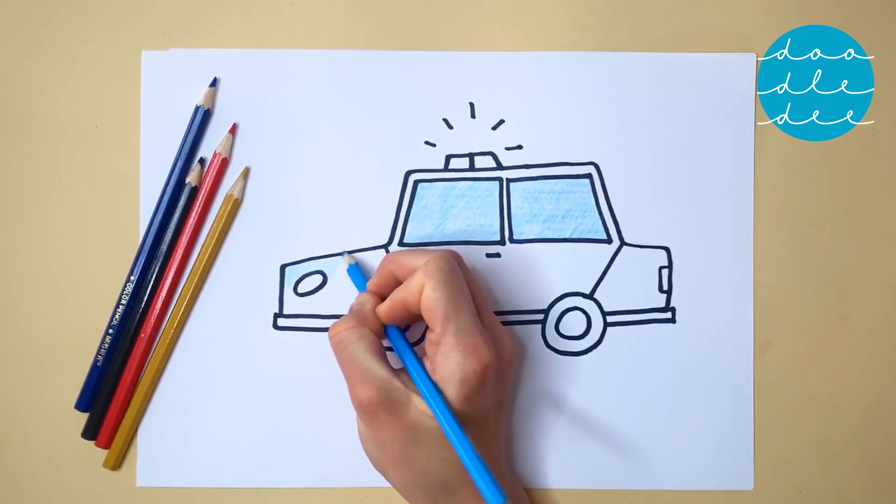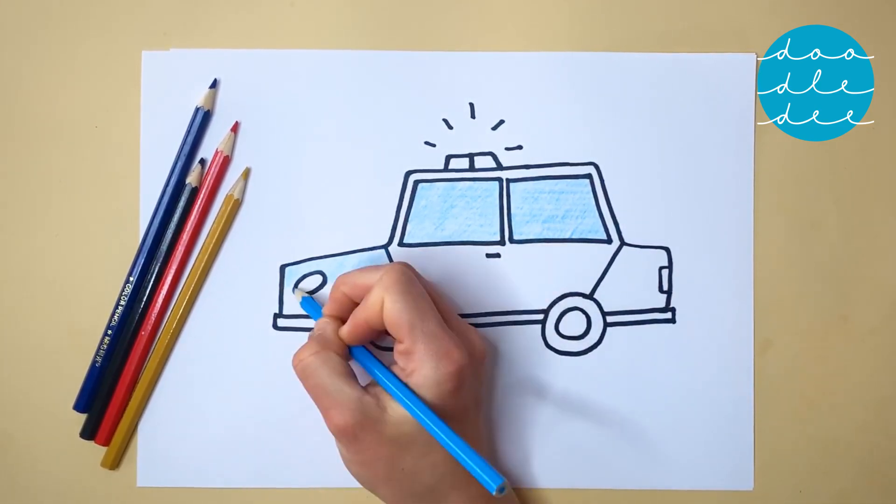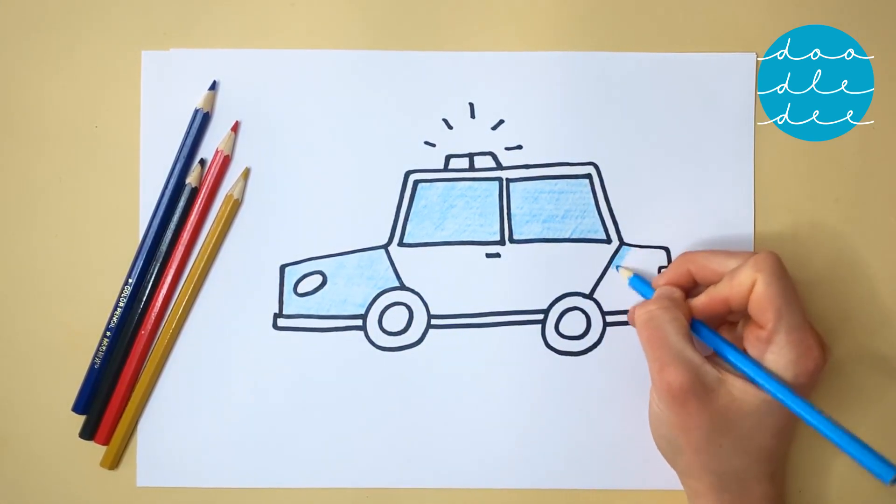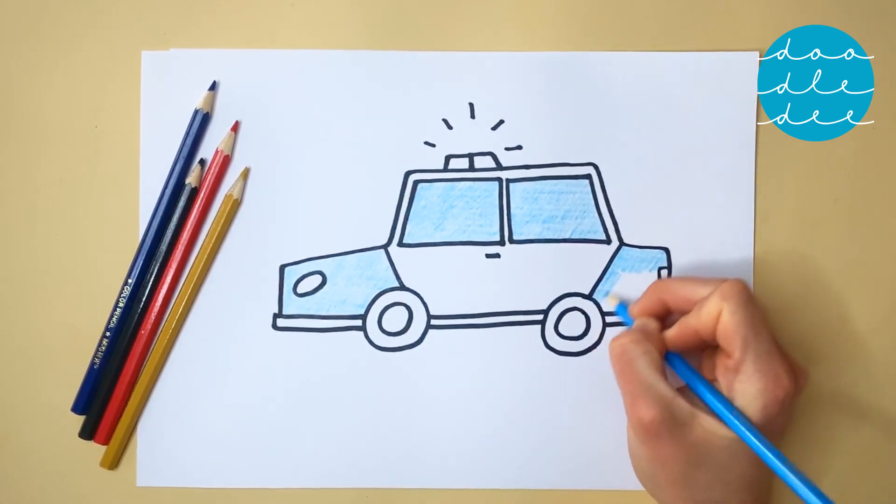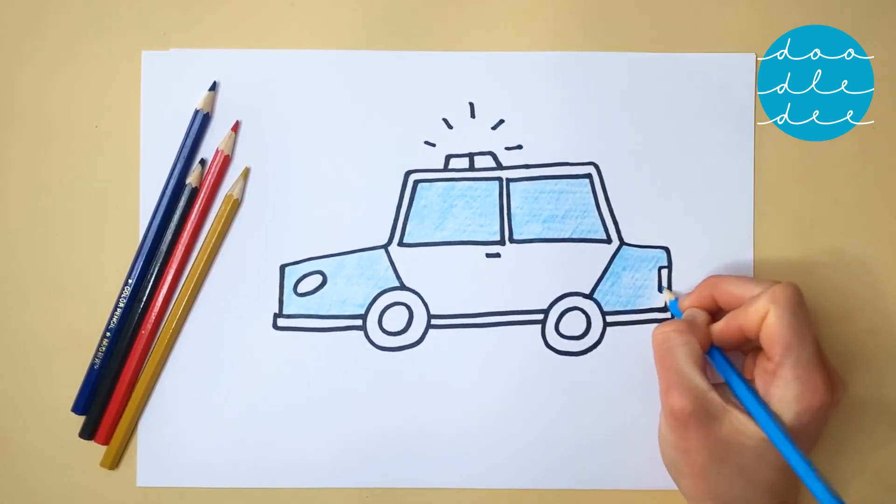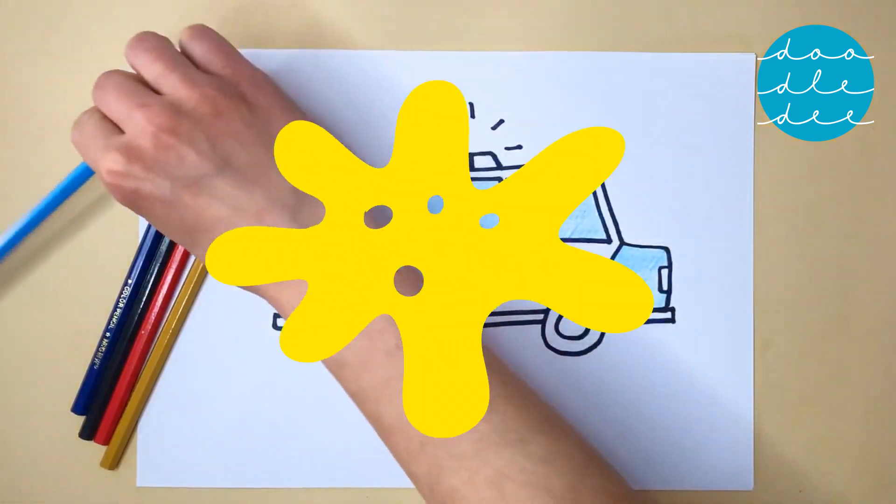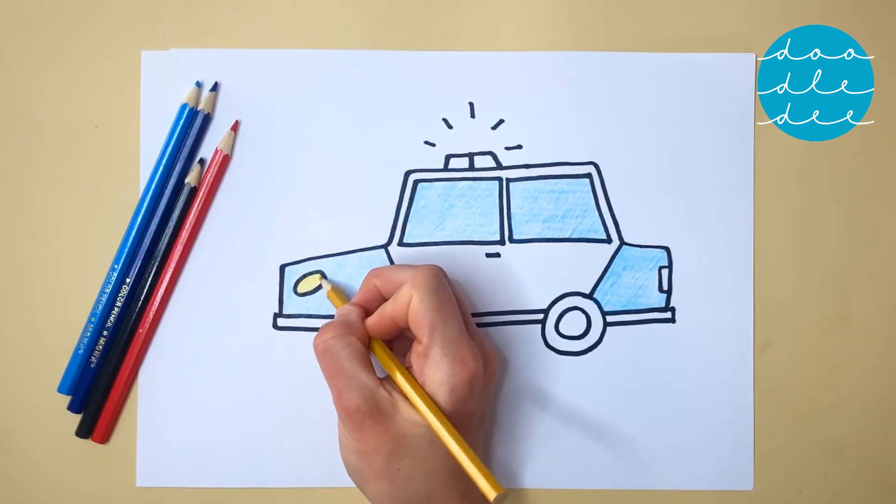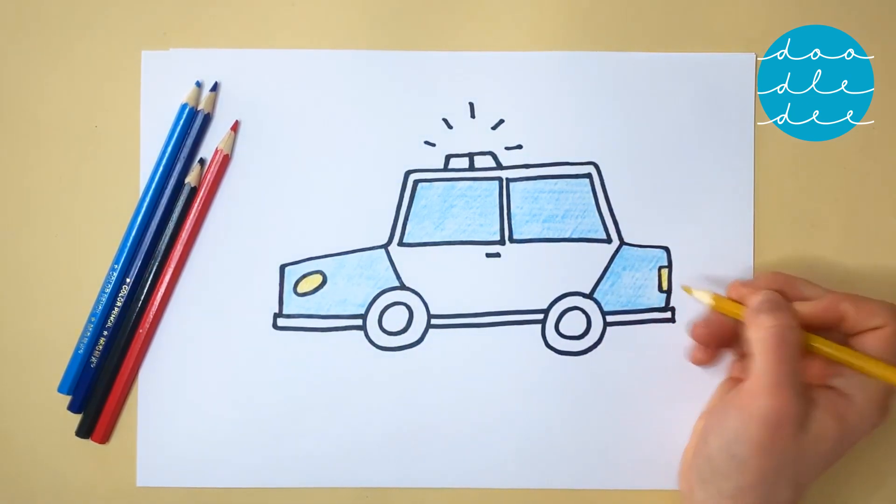Use light blue for the front of our police car. And light blue for the back of our blue and white police car. Yellow is next for the front and back lights. And the inside of the wheels.